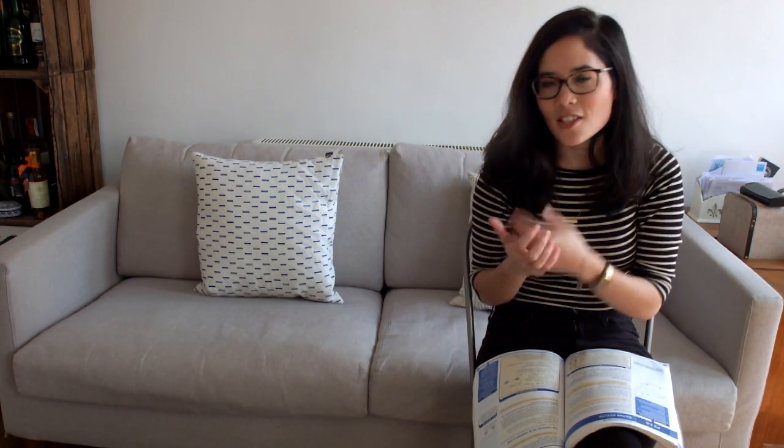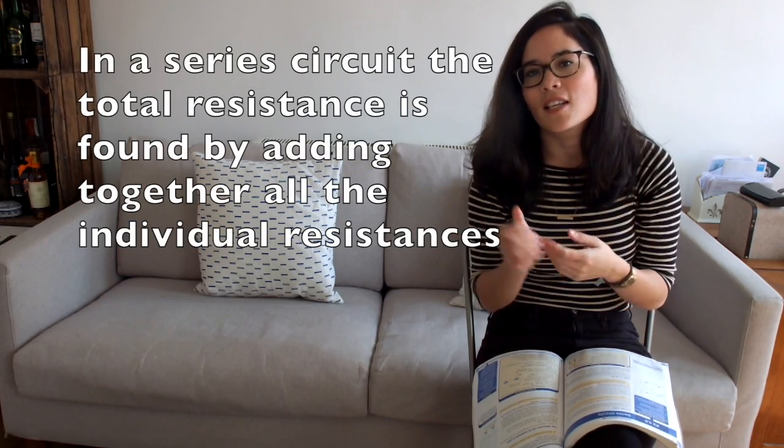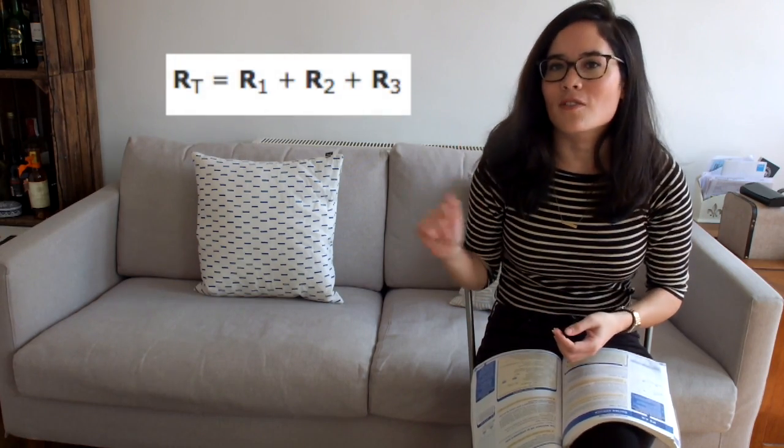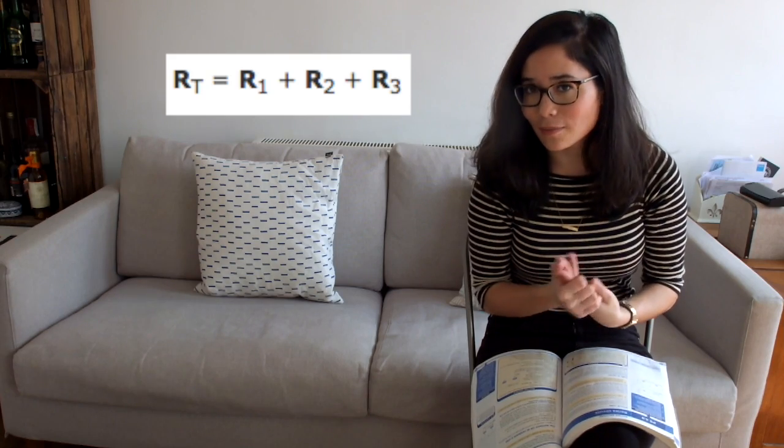What is the resistance rule for a series circuit? Just like the voltage in a series circuit, the total resistance is the sum of all the individual resistances of all the individual components. So effectively, total resistance equals resistance one plus resistance two plus resistance three.